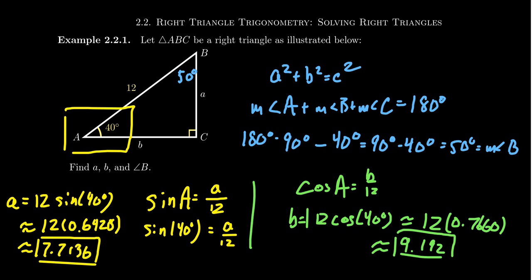Approximating: cosine of 40° ≈ 0.7660, and multiplying by 12 gives approximately 9.192. Once you see approximation symbols, everything is done in the calculator — type cosine of 40°, hit enter, then multiply by 12. So we can use SOHCAHTOA, the Pythagorean equation, and the triangle angle sum theorem to find all missing parts of a right triangle.